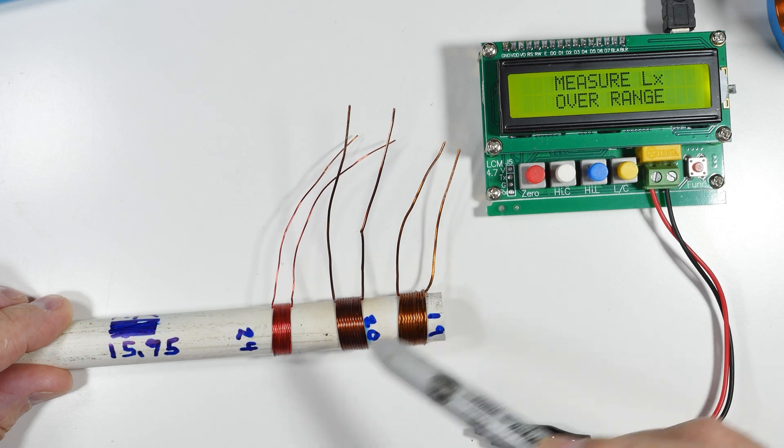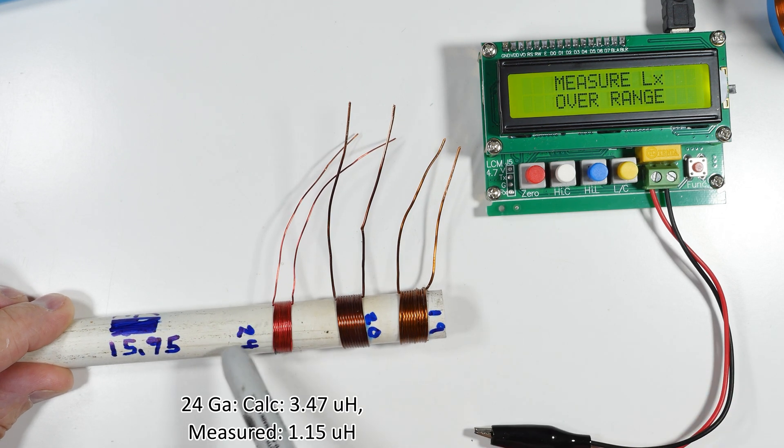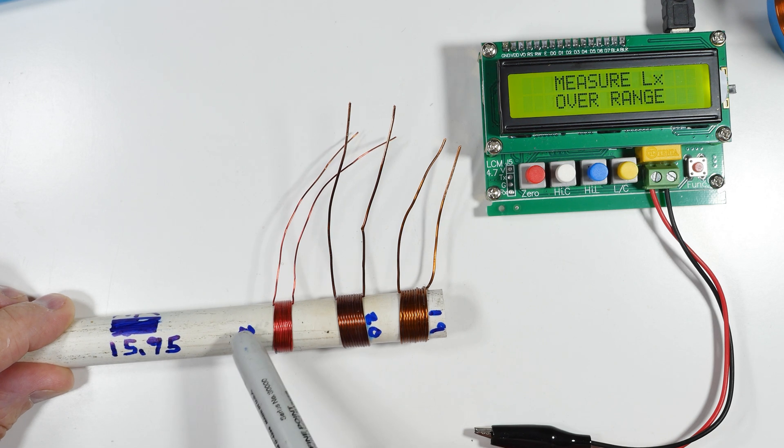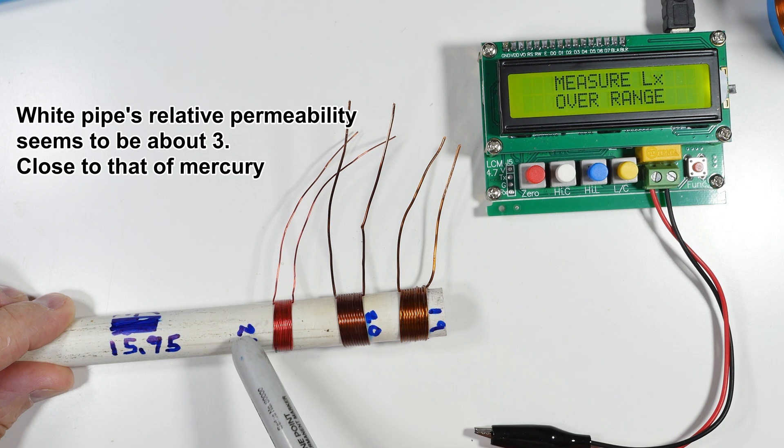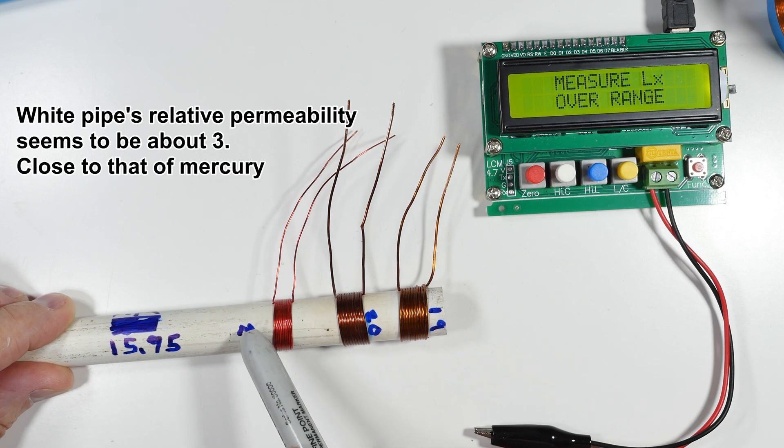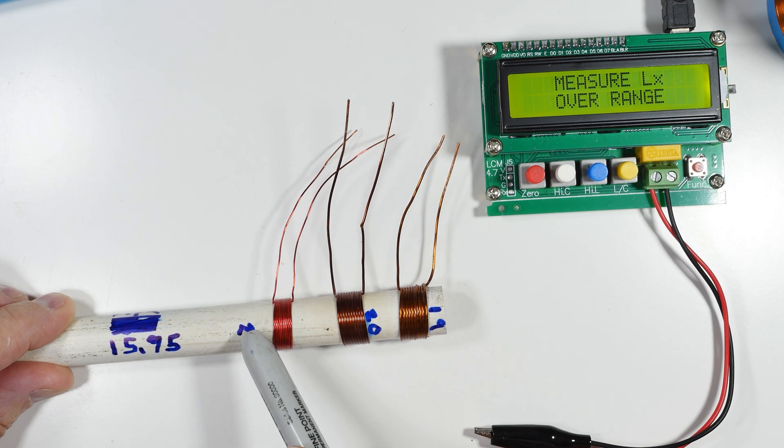Finally I tracked it down to the plastic pipe. The plastic pipe must have some filler in it that is interacting with the radio frequency waves and diminishing the inductance of the coil.